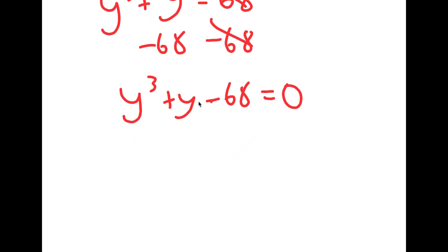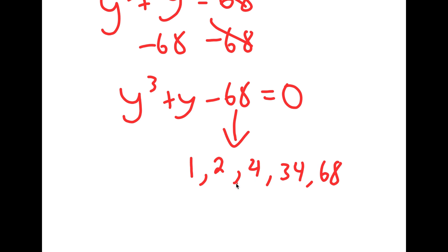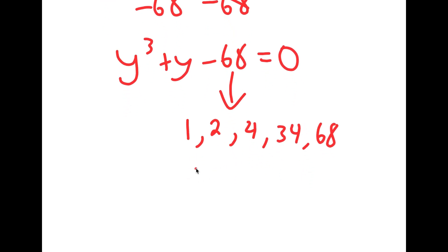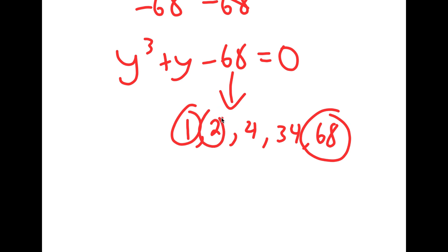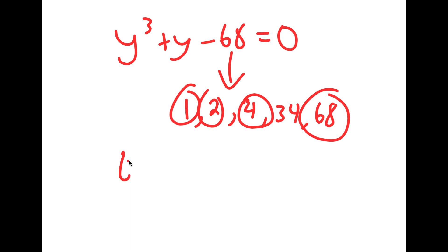To factor this and find the value of y, I need to first find the factors of 68. The factors of 68 are 1, 2, 4, 34, and 68. Now, 1 wouldn't work because 1 times 68 — we can't subtract those two to get y. And 2 wouldn't work either. The only one that would work is 4, because if you divide y minus 4 with y to the power of 3 plus y minus 68, that would be factorable.